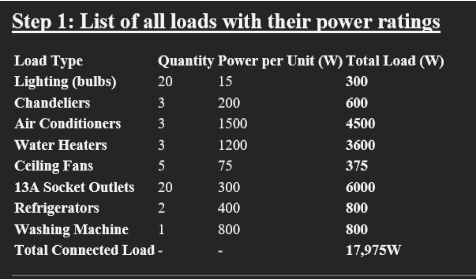We assume that each lamp is rated 15 watts, so 20 of them will give us a total of 300 watts for the lighting. We also have three chandeliers, and we assume that each of them will be rated 200 watts.